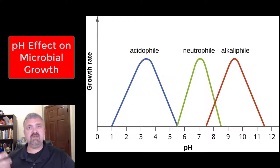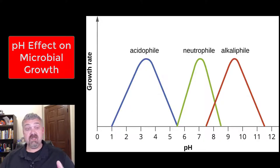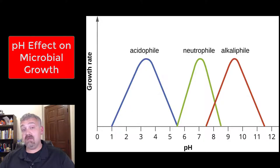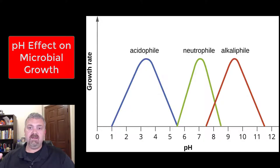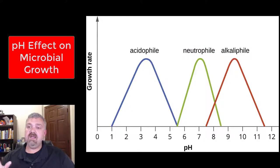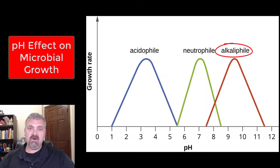We have already covered oxygen and temperature. The pH scale goes from 0 to 14. 7 is neutral. Anything with a pH under 7 would be acidic, and anything above 7 would be alkaline or basic. So an acidophile loves an acidic environment, a neutrophile loves that neutral pH around 7, and an alkalophile likes a more alkaline environment.